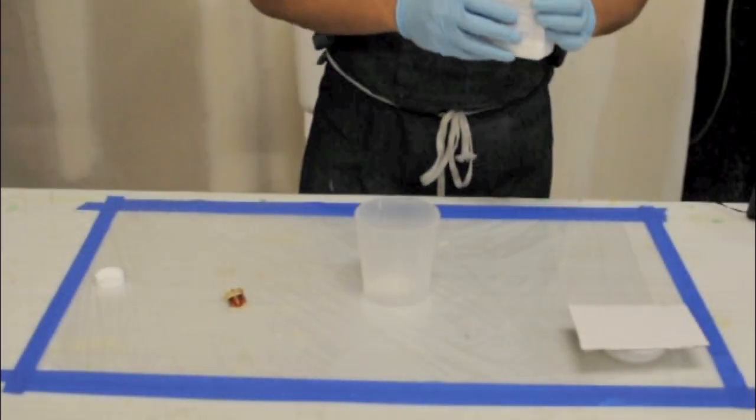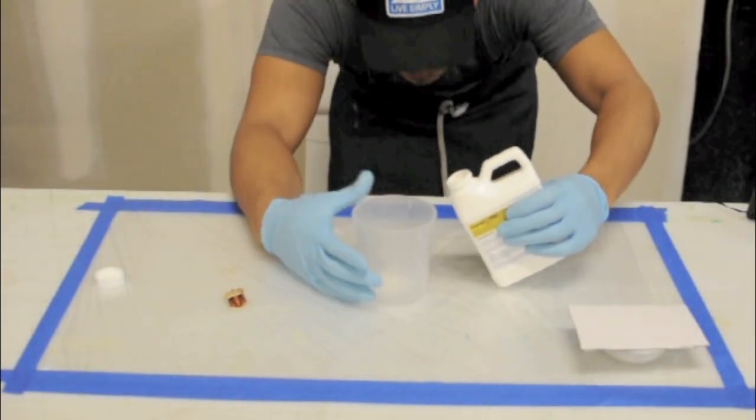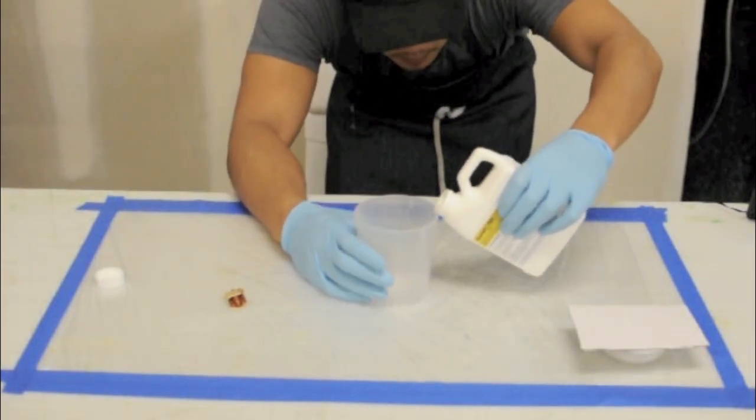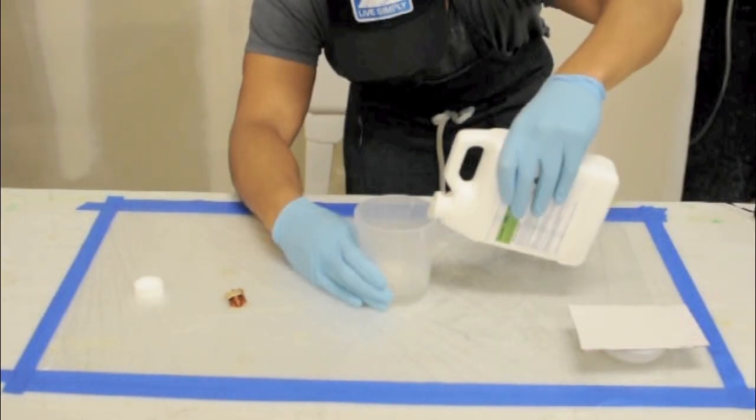For the next layer, we are going to repeat the same steps as before. First, we are going to properly measure out our hardener and our epoxy.